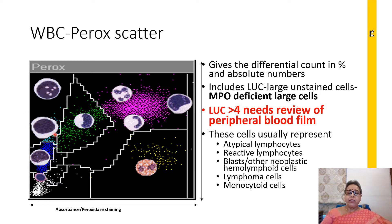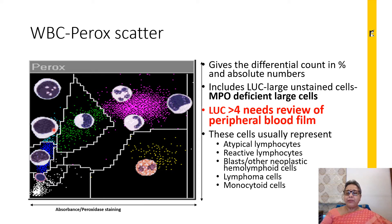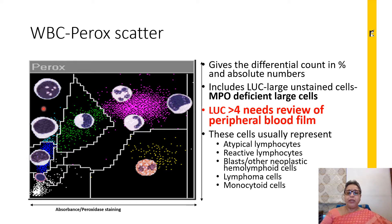The large unstained cell (LUC) is significant. If LUC numbers are greater than four percent, a peripheral blood film review is needed, as large unstained cells can represent atypical lymphocytes, reactive lymphocytes, blasts, lymphoma cells, hairy cells, and so on — they could be benign or neoplastic. So if it is greater than four percent, the smear needs to be looked at.